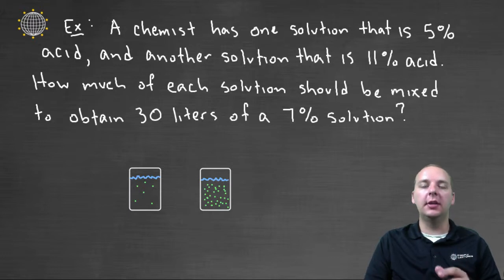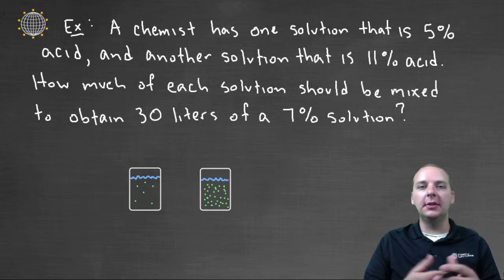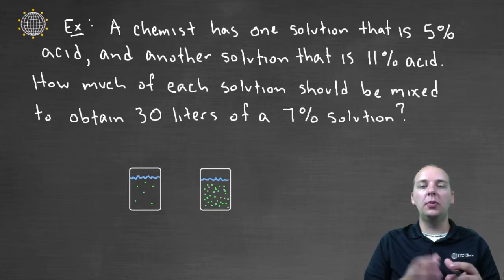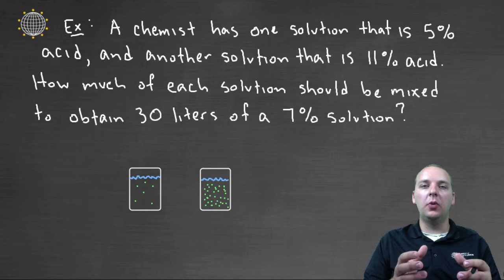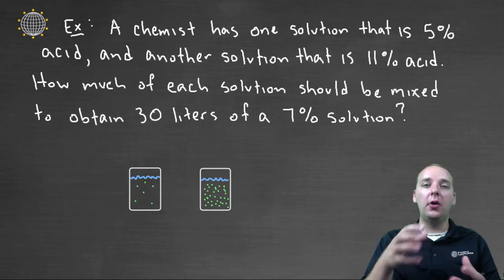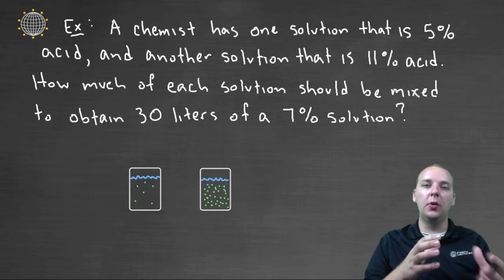One application problem that traditionally gives students a lot of trouble is called a mixture problem. Basically, someone has two solutions with varying percentages of either acid, alcohol, antifreeze, or something similar. Usually one percentage will be on the low side and one on the high side, and the goal is to mix these two quantities together to get a certain volume of solution with a percentage somewhere in the middle.